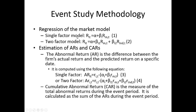The methodology includes two different models. One is a single factor model using just the market return, and the second is a two-factor model using a market return and an industry return. The abnormal return (AR) is the difference between the firm's actual return and the predicted return on a specific date. For the single factor model, the abnormal return equals the individual firm's return on day T minus the quantity of the estimated intercept plus the estimated beta multiplied by the market return on day T.